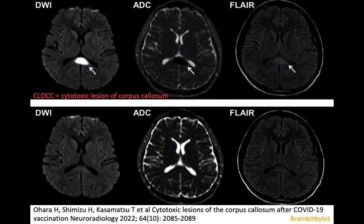Initially MERS was described post-viral infection in children, but later in adults as well. In adults, the descriptive term 'cytotoxic lesion of the corpus callosum' — CLOCK — can be used. In CLOCK or MERS in adults, you see the same pattern as in children. With the recent COVID pandemic, there were also case reports of cytotoxic lesions after COVID vaccination.